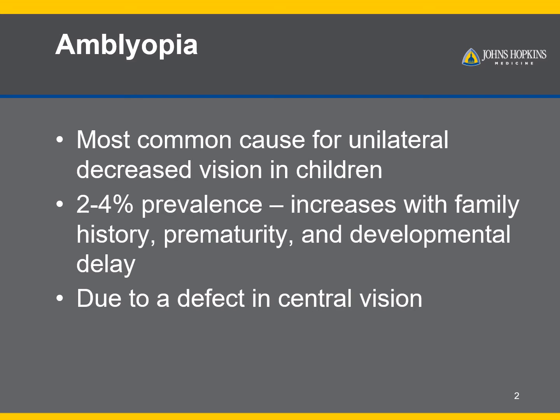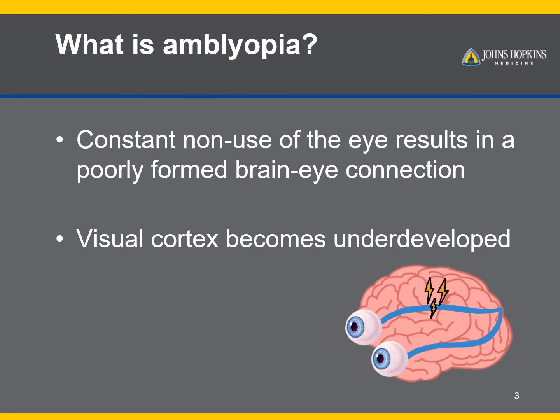Children are susceptible to this at least until age seven or eight. When an eye is not able to see well due to a defect, the eye is not used or is ignored by the brain. With constant non-use over time, this results in a poorly formed brain-eye connection. When all of this occurs during the critical period for brain and vision development, it can lead to long-term permanent changes in the brain. The visual cortex, which is the part of the brain responsible for vision, becomes underdeveloped.